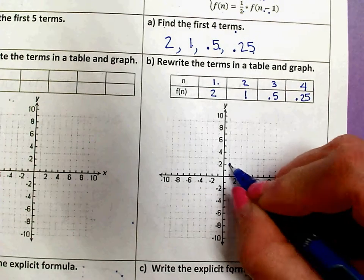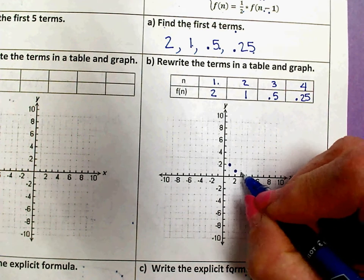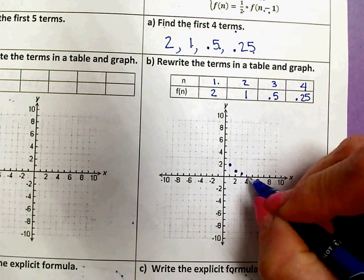So if you're plotting your points, 1 comma 2, 2 comma 1, 3 comma 0.5, 4 comma 0.25.